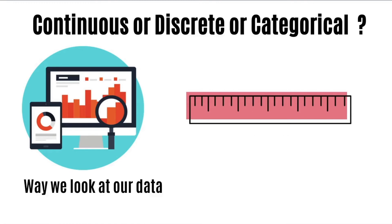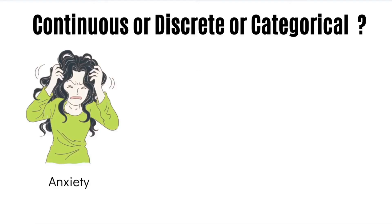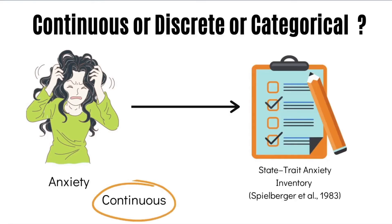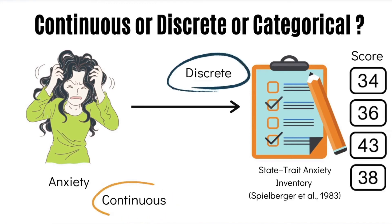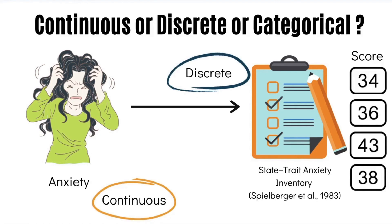A variable in theory may be continuous but the way we measure it could be discrete. For example, anxiety is theoretically a continuous variable, but if we measure it using a questionnaire like the State-Trait Anxiety Inventory proposed by Spielberger and colleagues in 1983, participants receive a total score that can only increase in whole units — say from 38 to 39 or from 34 to 36. Thus the way we measured anxiety is discrete, whereas the underlying variable is assumed to be continuous.